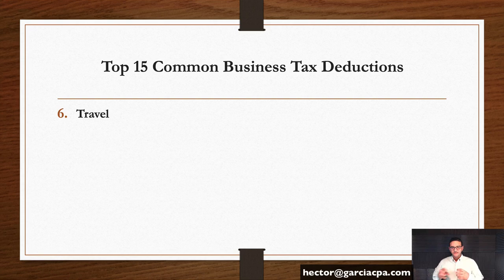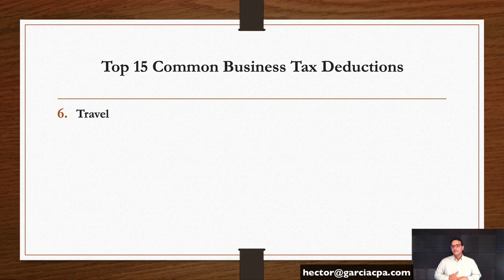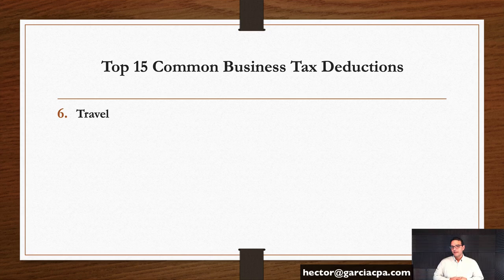Number six: travel. If you're traveling for business — to the job site, the client's office, a trade conference to learn about the business, meet potential partners or vendors — that is deductible. Where most business owners fail is mixing personal travel with business travel; the IRS will deem that personal and it's no longer deductible. Make sure you document the specific place you went, how it pertains to your business, the clients and vendors you met, and the type of business conducted. Remember, audits are two to three years in arrear.